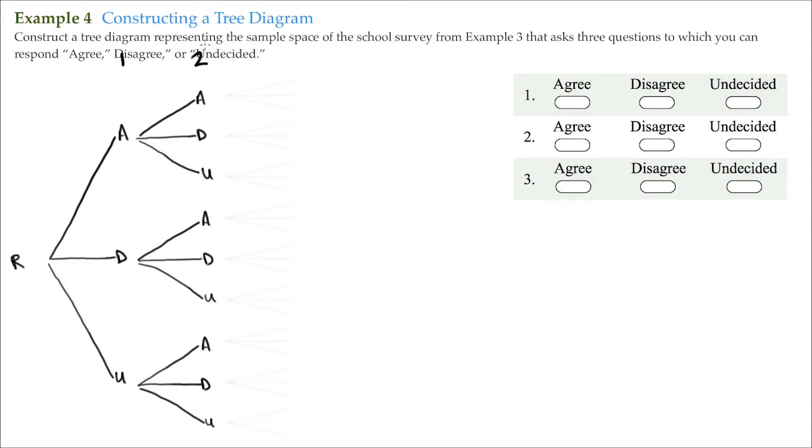And by the time we get to question three here, the pattern will continue. If I answered agree on the second question, I could still answer agree, disagree, or undecided on the third question, so I continue: agree, disagree, or undecided.